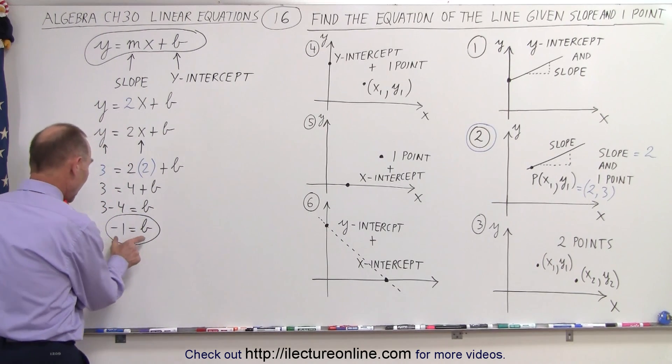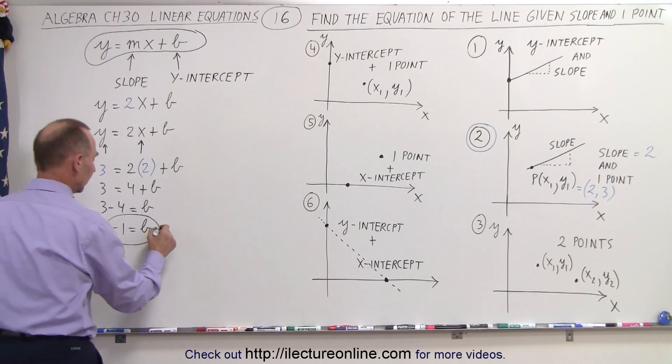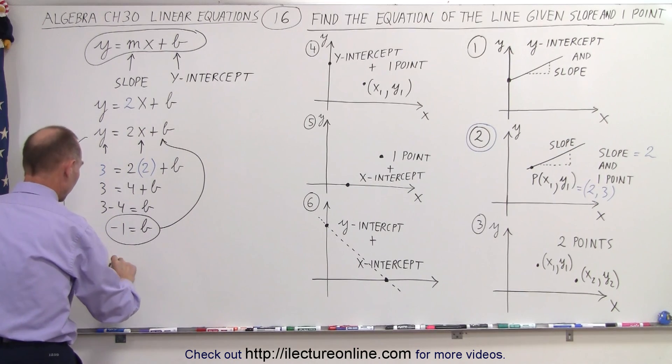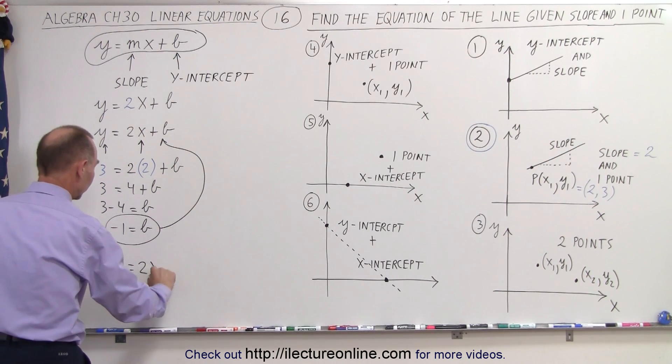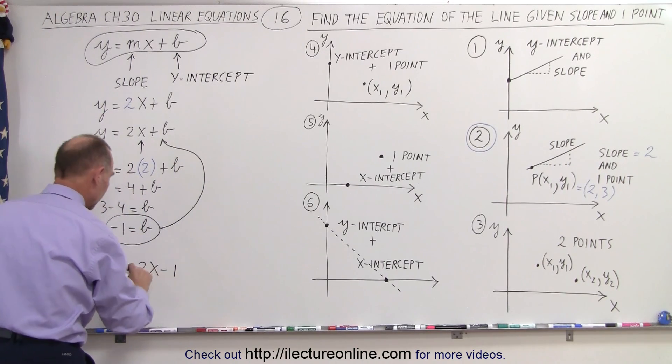Okay, now that we have the value for the intercept, it gets plugged back in here. So we're going to substitute that back in. And then our equation becomes as follows: y is equal to 2x, and plus b. But since b is negative 1, we get minus 1.